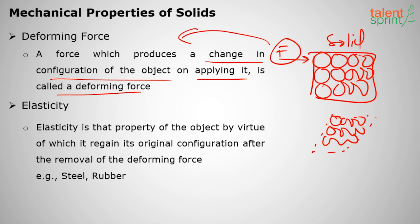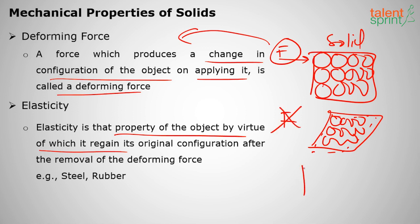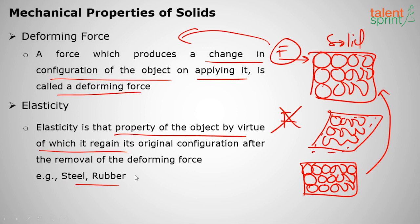Elasticity is a property of the object by virtue of which it regains its original configuration after the removal of the deforming force. Suppose a body has deformed; when I remove the force F, if the body is able to regain back its original position, then that body is called an elastic body. General examples are steel and rubber — these are elastic bodies.